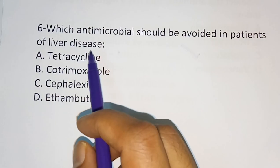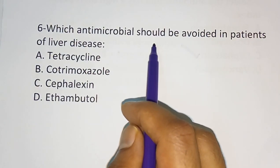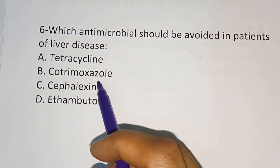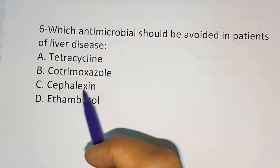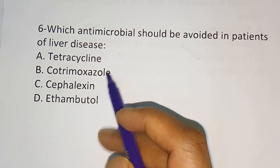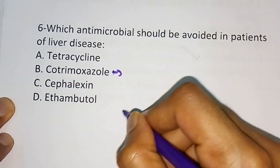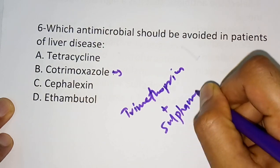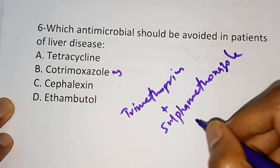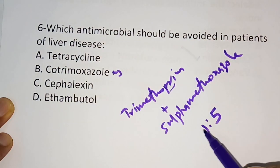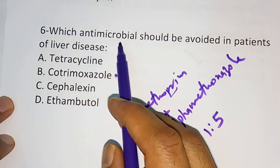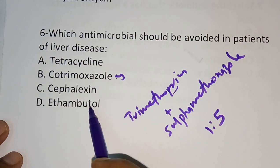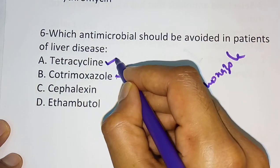Question number six: which antimicrobial should be avoided in patients with liver disease? Options are: tetracycline, co-trimoxazole (which is trimethoprim plus sulfamethoxazole in a 1:5 ratio), cephalexin, ethambutol. The correct answer is tetracycline, which should be avoided in patients with liver disease. Note: co-trimoxazole is the combination of trimethoprim and sulfamethoxazole in a 1:5 ratio.